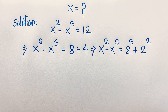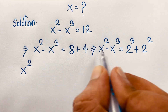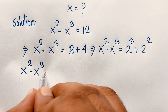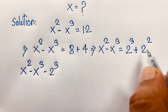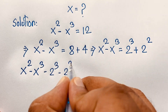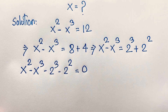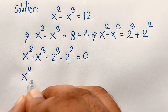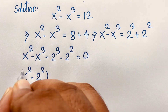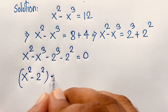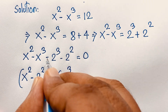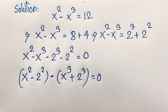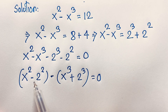So we have x to the power 2 minus x cubed. Moving these values to the left side, we get negative 2 to the power 3, and moving the other value gives us negative 2 to the power 2, equal to 0. Then I take 2 squared as a bracket, and with a negative sign common, we get x to the power 3 minus 2 to the power 3 is equal to 0.